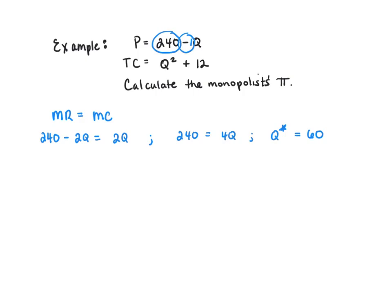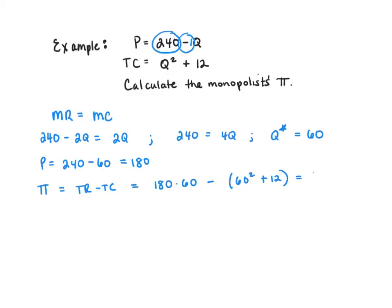At this quantity, the monopolist then needs to decide the price it wants to charge. Monopolies are price makers, so they can choose this price, but they are still bound by what consumers are willing to pay. Here, consumers are willing to pay P equals 240 minus Q, so price is 240 minus 60, or $180. Given this price and quantity, profit is total revenue minus total cost: 180 times 60 minus (60 squared plus 12), giving us a profit of $60.